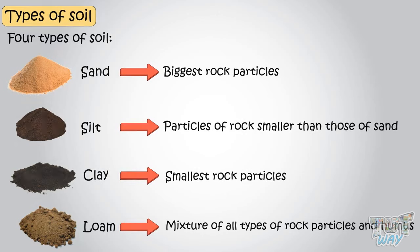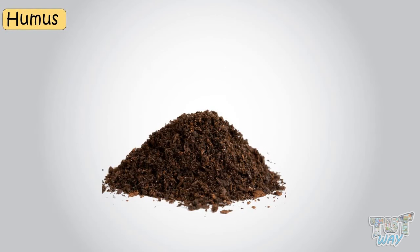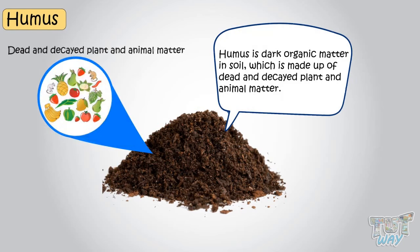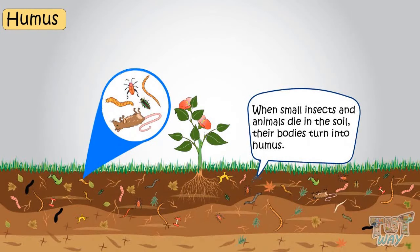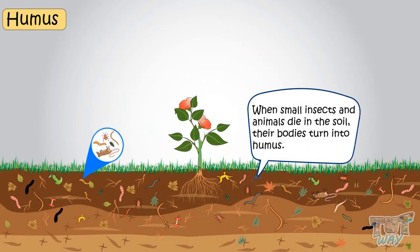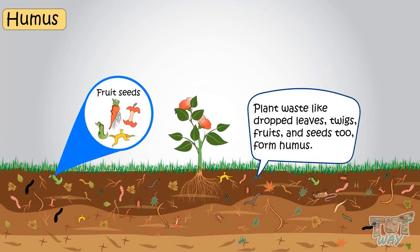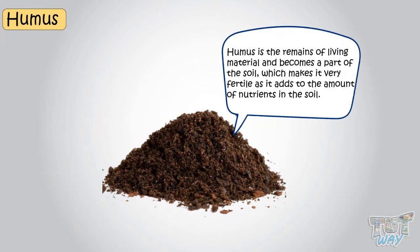Now let's learn what humus is. Humus is dark, organic matter in soil, which is made up of dead and decayed plant and animal matter. Like when small insects and animals die in the soil, their bodies turn into humus. Likewise, plant waste like dropped leaves, twigs, fruits, and seeds too form humus. So humus is the remains of living material, and becomes a part of the soil, which makes it very fertile, as it adds to the amount of nutrients in the soil.